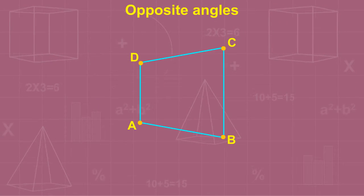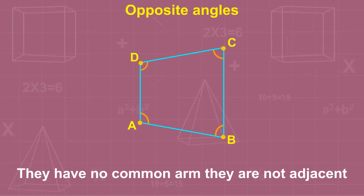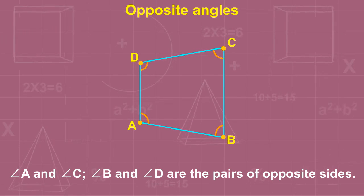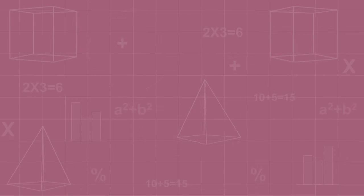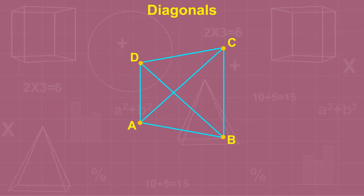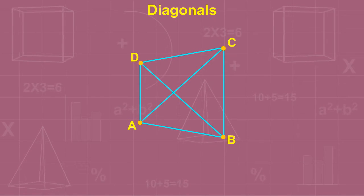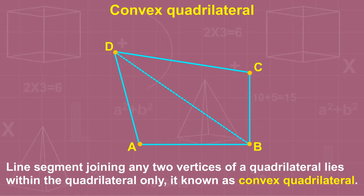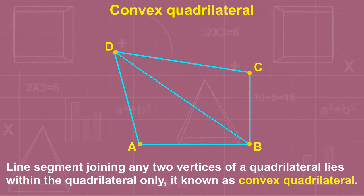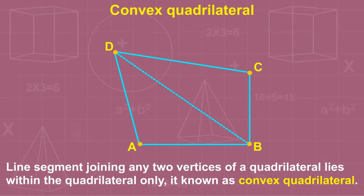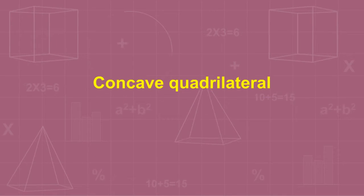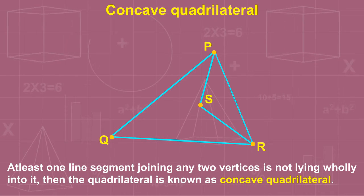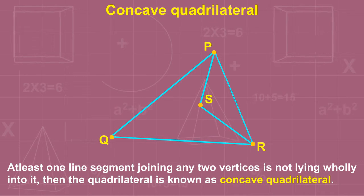Two angles are said to be opposite angles if they have no common arm. Angle A and angle C, and angle B and angle D, are the pairs of opposite angles. The line segments which join the opposite vertices or the two non-consecutive vertices are called diagonals. A convex quadrilateral is one where any line segment joining two vertices lies wholly within the quadrilateral. If at least one such line segment does not lie wholly within it, the quadrilateral is called a concave quadrilateral.